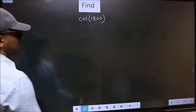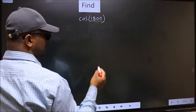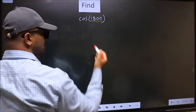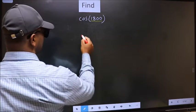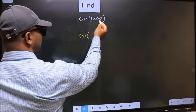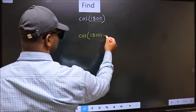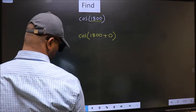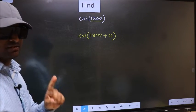See, here we have 1800 and 1800 is a multiple of 180. So what we should do is cos. In place of this, we should write 1800 plus 0. This is your step 1.